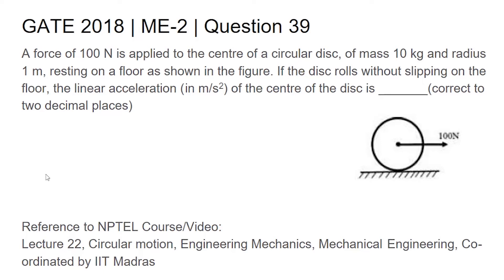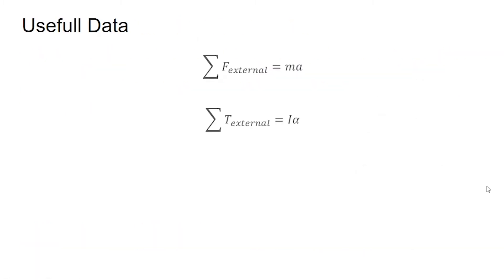Before moving to the video solution, we need to know some basic formulas. The first one is: the summation of all external forces equals mass times acceleration of the body. Similarly, the summation of all external torques applied on the body equals the product of its moment of inertia and angular acceleration. With these formulas we can find the acceleration of the solid disk.